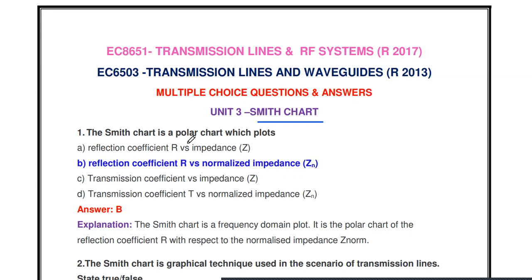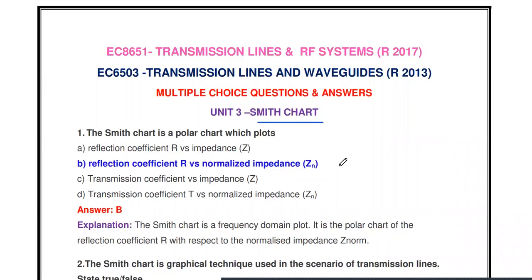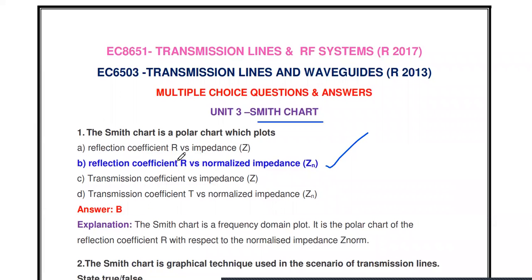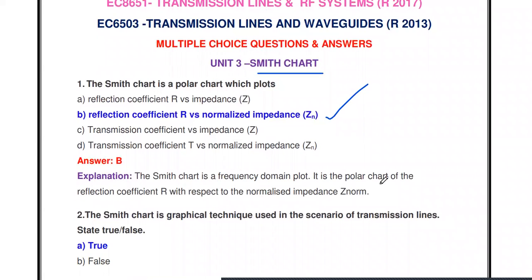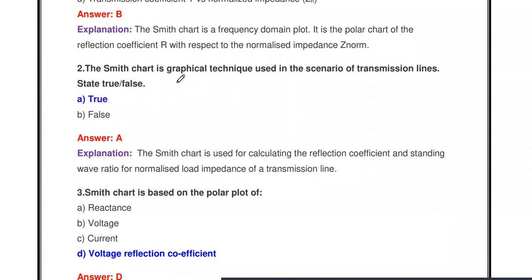The first question: The Smith chart is a polar chart which plots what? Four options are given: reflection coefficient versus impedance, reflection coefficient versus normalized impedance, transmission coefficient versus impedance, transmission coefficient versus normalized impedance. The answer is: the Smith chart is a polar chart which plots the reflection coefficient versus normalized impedance. The normalized impedance is the ratio of the load impedance divided by the characteristics impedance. The Smith chart is a frequency domain polar plot of reflection coefficient with respect to normalized impedance.